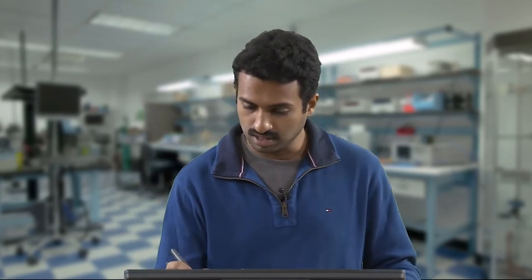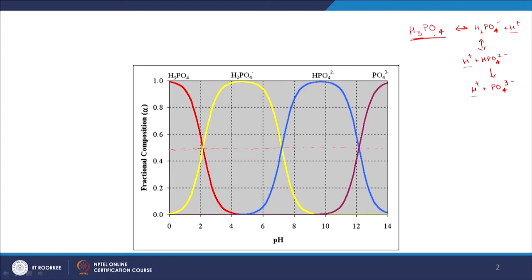We are going to look at the triprotic acid. Here we have an example of a triprotic acid: H₃PO₄, which has 3 protons and is thus triprotic. It can dissociate into H₂PO₄⁻ plus H⁺, and then H₂PO₄⁻ can again dissociate into H⁺ and HPO₄²⁻, and HPO₄²⁻ can further dissociate into H⁺ and PO₄³⁻. So H₃PO₄ can donate a total of 3 protons depending upon the pH.